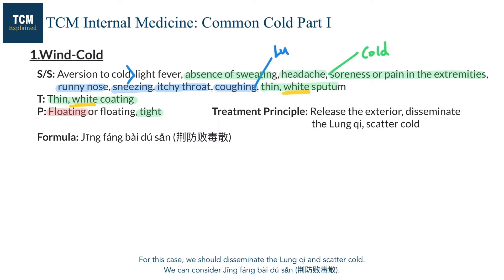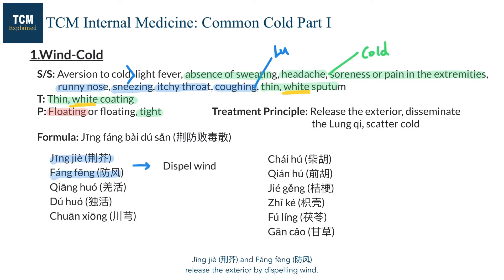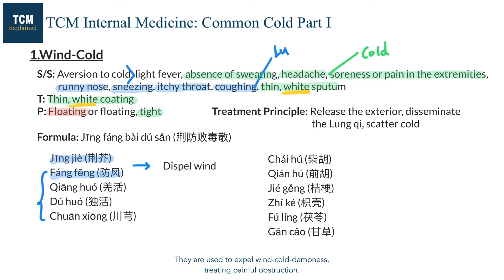For this case, we should disseminate the lung Qi and scatter cold. We can consider Jing Fang Bai Du San. Jing Jie and Fang Feng release the exterior by dispelling wind. Fang Feng, Jiang Huo, Du Huo, and Chuan Xiong, which we have seen in the headache pattern, are used to expel wind cold dampness and treat painful obstruction.